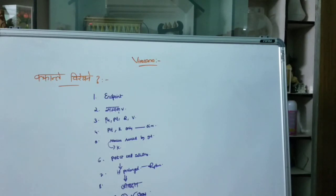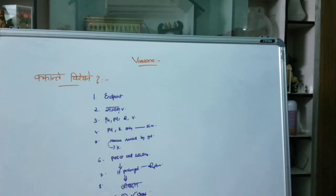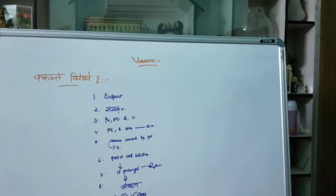First, we administer the virechana. Purisha will expel out, later on pitta, and then rakta. If we further indulge in the process, then vata will be eliminated. After the elimination of purisha and pitta, the mucus secreted by the large intestine is eliminated.